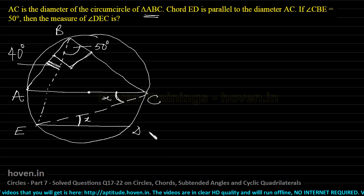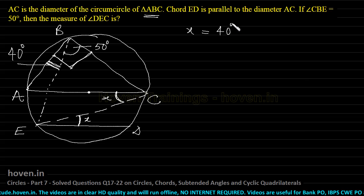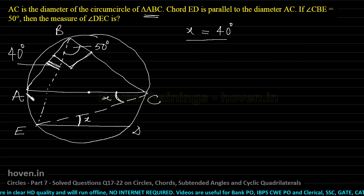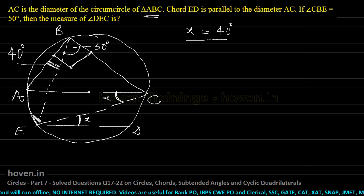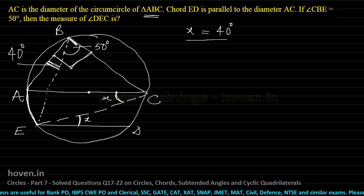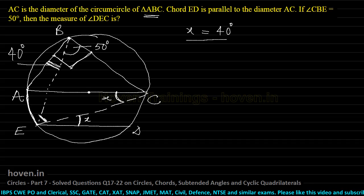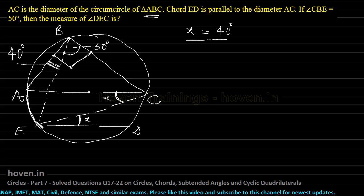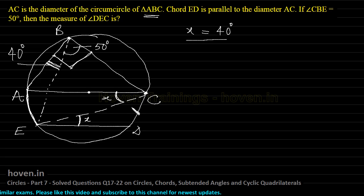The answer is just one step away. I assert that angle X will be 40 degrees. See this arc AE. This arc AE is subtending an angle of 40 degrees with point B on the circle. Also simultaneously, the same arc is subtending X on the circle with point C. Therefore, angles in the same segment have to be equal. Hence, if this is 40, this angle X will also be 40 degrees, which is the required answer.